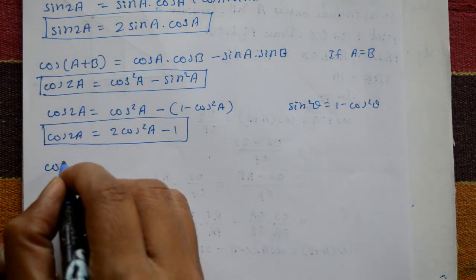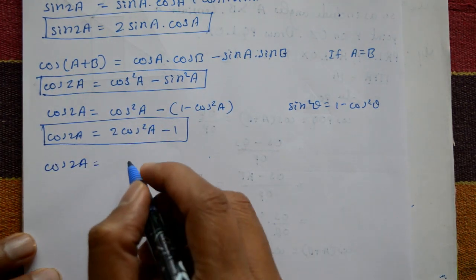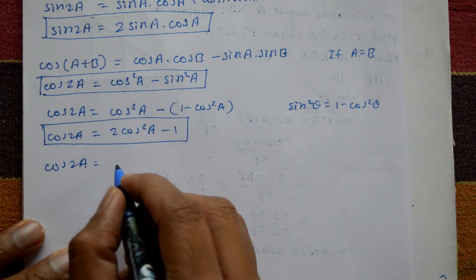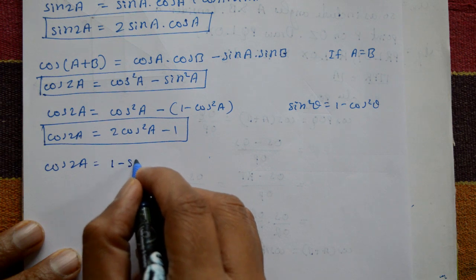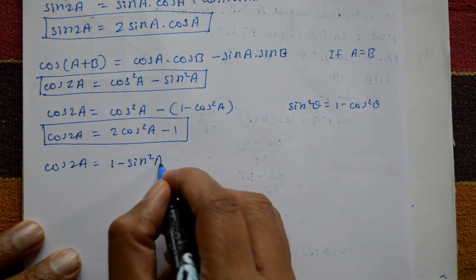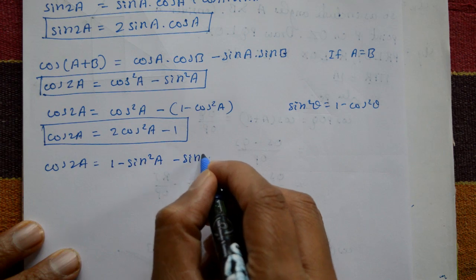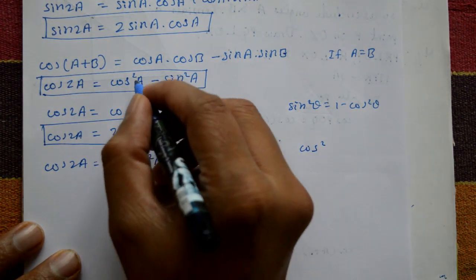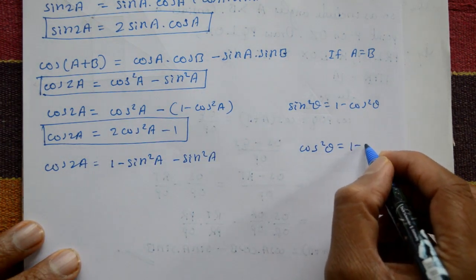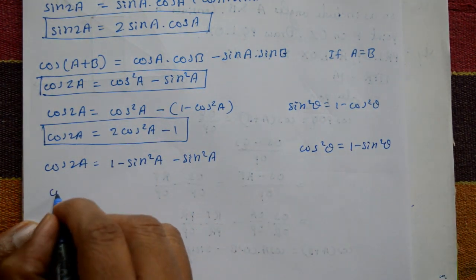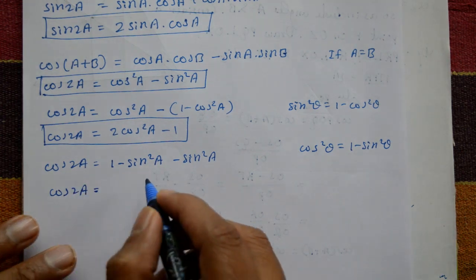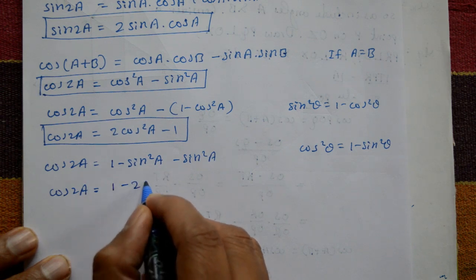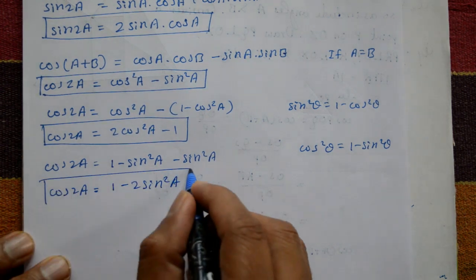Again taking cos 2a equals cos squared a minus sin squared a, replace cos squared a with 1 minus sin squared a. Changing this: cos 2a equals 1 minus sin squared a minus sin squared a equals 1 minus 2 sin squared a. This is also a standard formula.